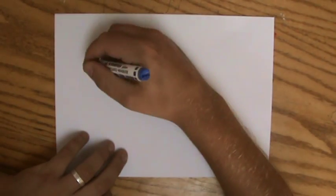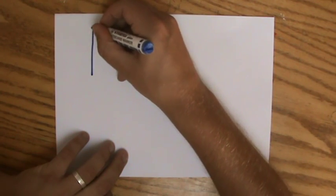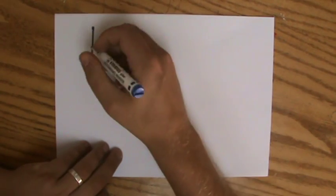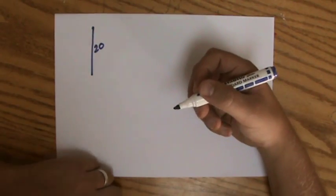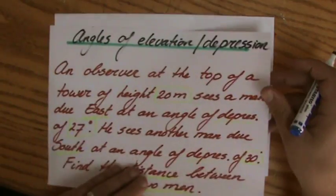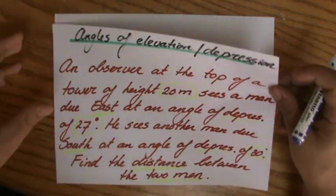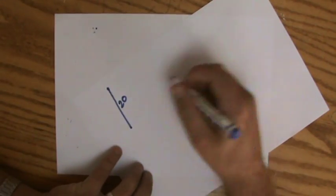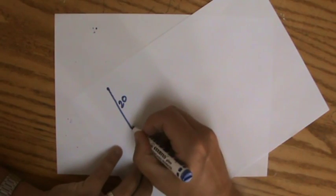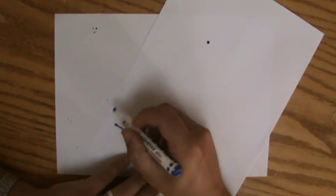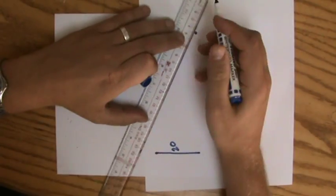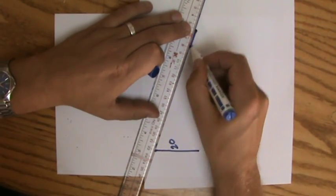Let me start with a tower. I'm standing at the top of that tower which is 20 meters high, so I'm going to put 20 there. The angle of depression is 27 degrees due east. I see somebody on the floor. Let me grab my ruler.